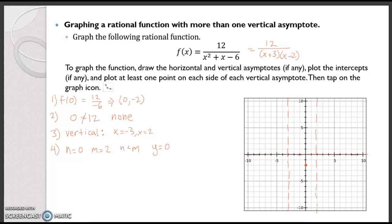There is not going to be symmetry because of the asymptotes — we could also check by plugging in f of negative x. Then for the next step we're going to plug in some points. We have to plug in points not only to the left and right of the x equals negative 3 asymptote, but also to the left and right of the x equals 2 asymptote.